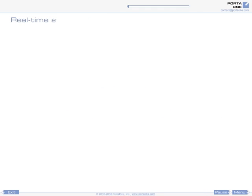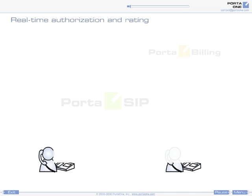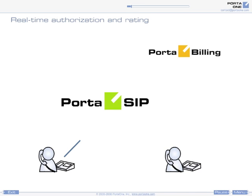Real-time authorization and rating. On each call attempt, PortaSIP connects to billing via the RADIUS interface and performs authorization, so that customers are able to call only to destinations permitted by their rate plan.